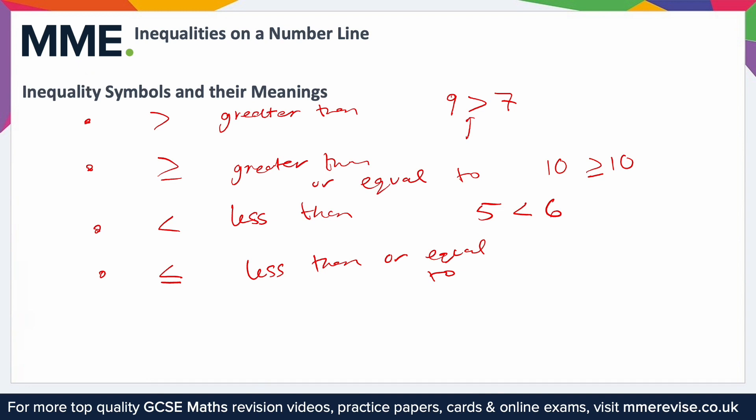For example, you could say 7 is less than 7 — at first that doesn't make any sense because 7 is the same value as 7. But as soon as I introduce this little line, 7 is less than or equal to 7, so now it is true.